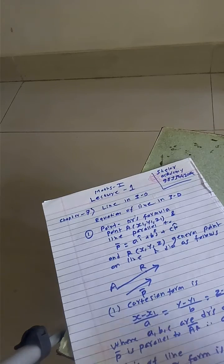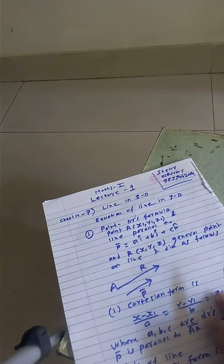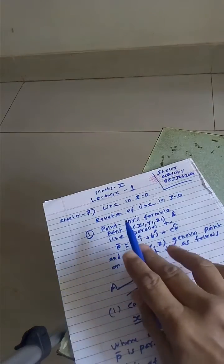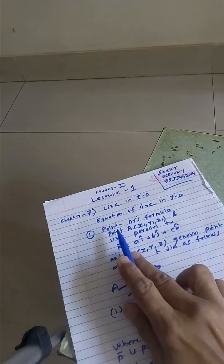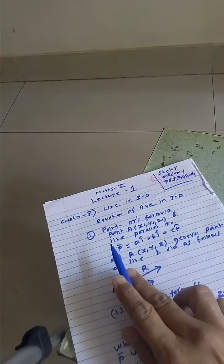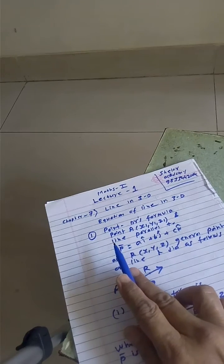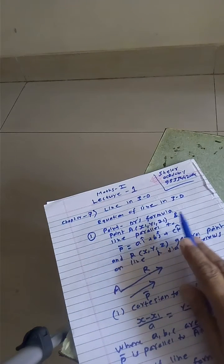Hello students, we are starting chapter number 7, line in 3D. Equation of line in 3D, there are two formulas. Formula number 1, point direction ratio formula.